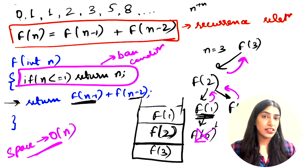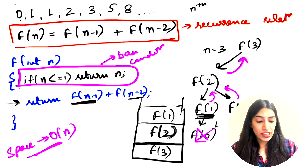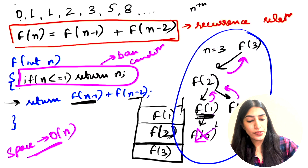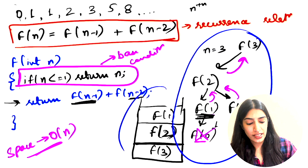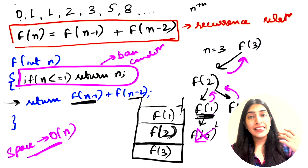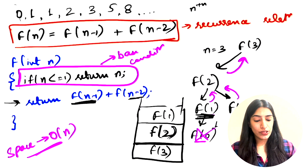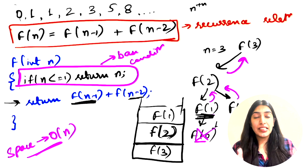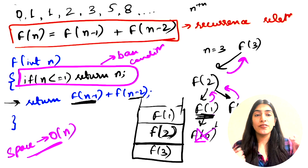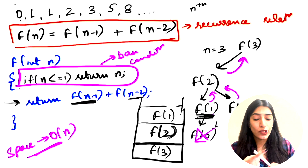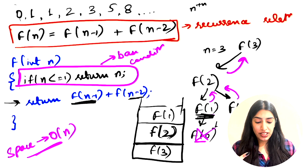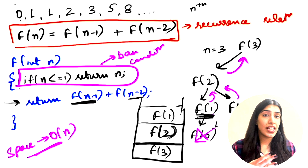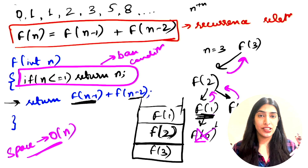To quickly summarize: first we identified the recurrence relation, then wrote the code, then determined the base condition. Then we started filling our stack to visualize it and began forming our recursive tree. The structure we draw to visualize the calls is called the recursive tree, and the memory structure is called the recursive stack. These are the last two important points — we've seen the first half of the tree and stack so far.